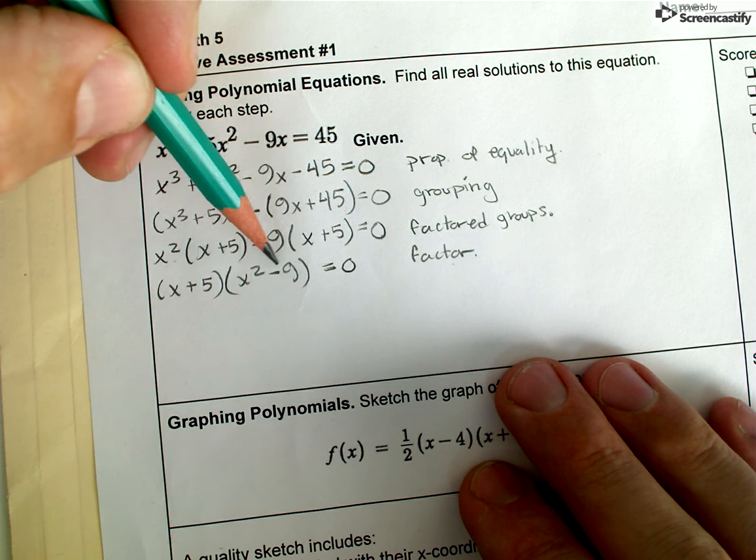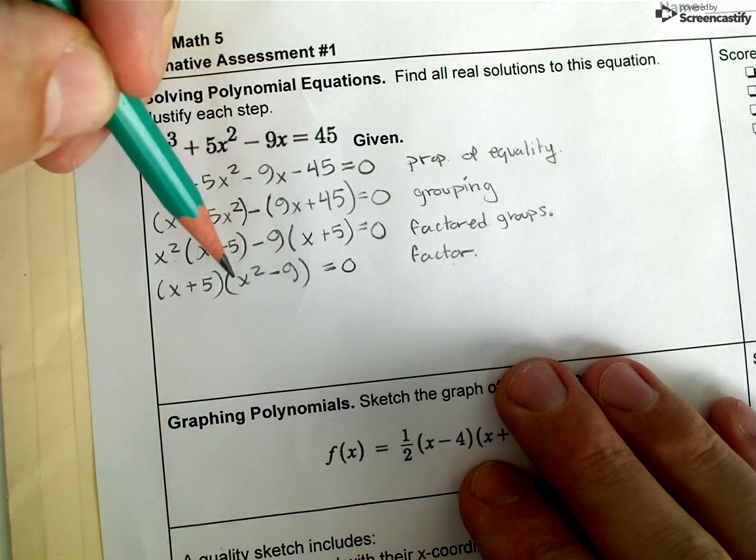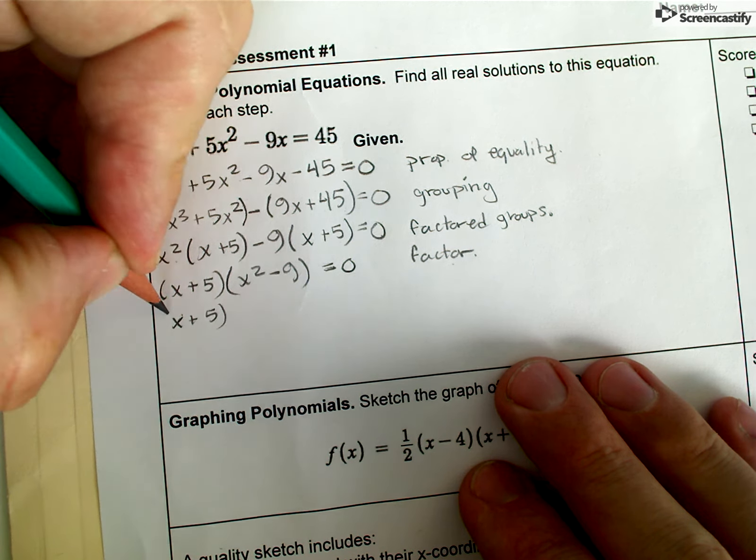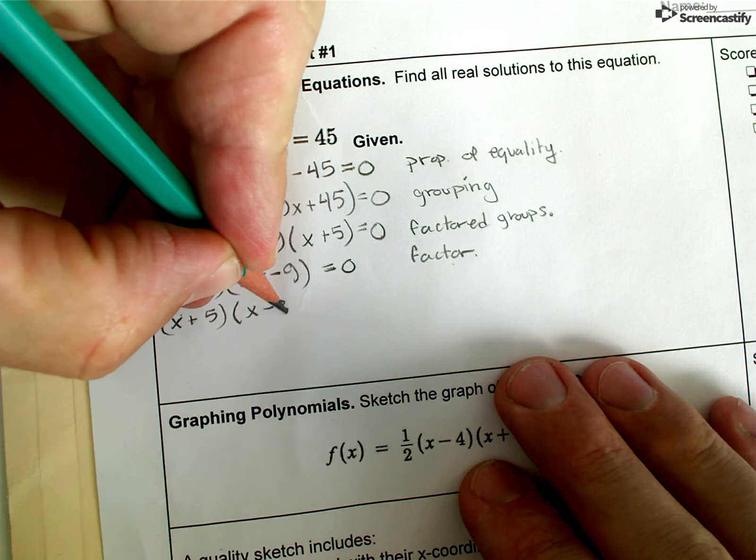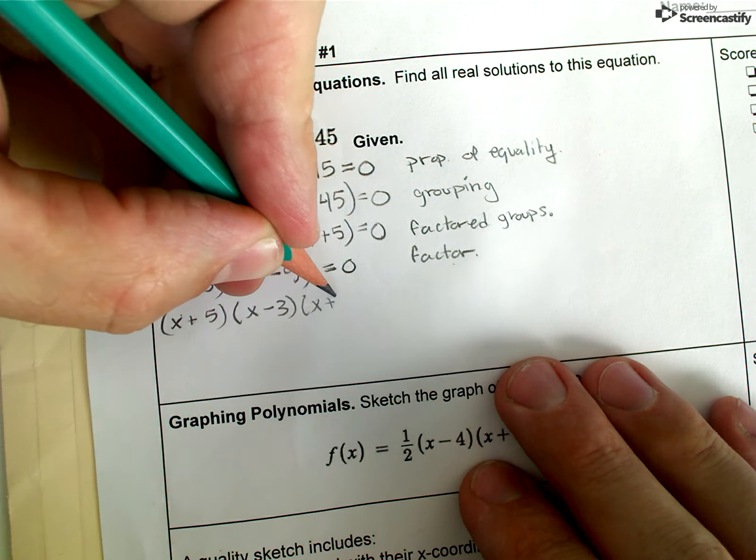Now there's a couple ways to proceed from here. I could go straight to the zero product property and set this factor equal to zero and this factor equal to zero. That's one strategy. I can also notice that this is a difference of squares, and I can factor this quadratic using any technique for factoring a quadratic.